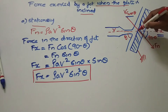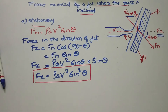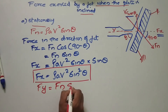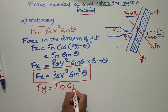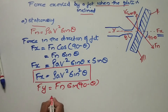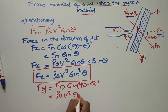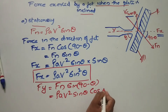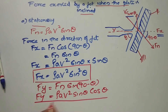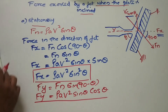Now for F of Y: F_y = F_N × cos(90° − theta) and sin(90° − theta). That gives F_y = rho × A × V² × sin theta × cos theta. That will be our F of Y.